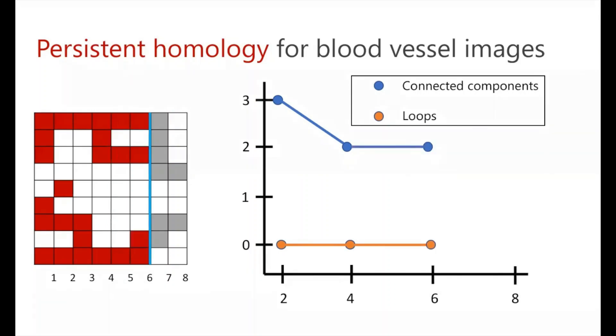Next, if we move the line two more pixels over, we still have two connected components and no loops. But then finally, when we've moved our line eight pixels over in our final step of the filtration, our loop has become filled in here, so we now have one loop in our binary image.